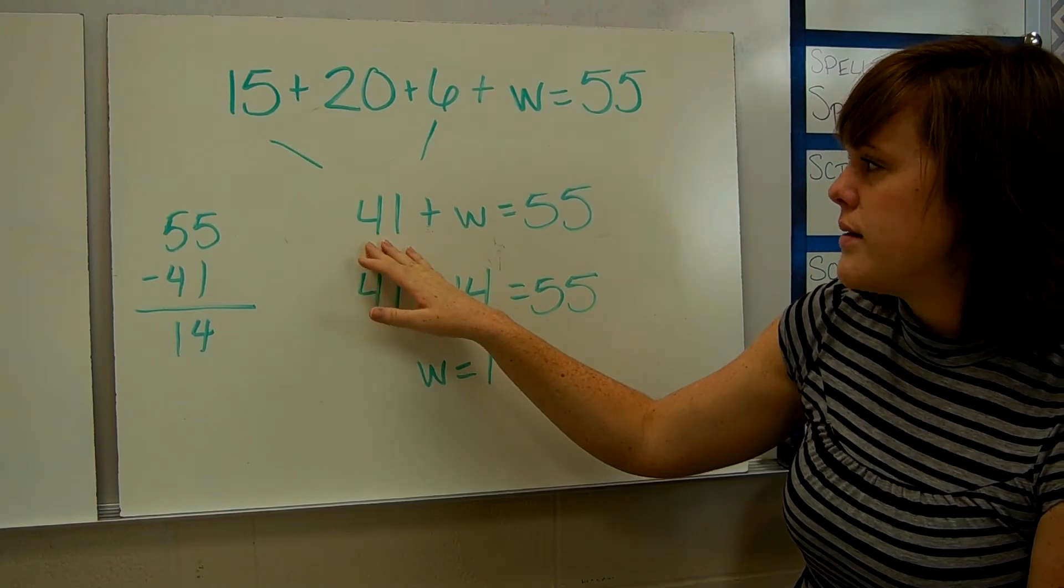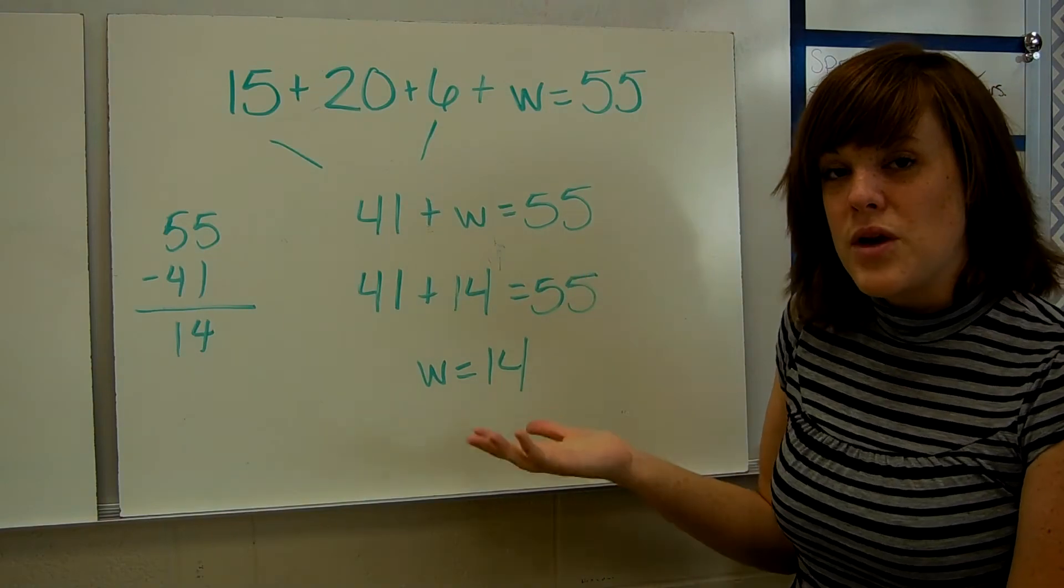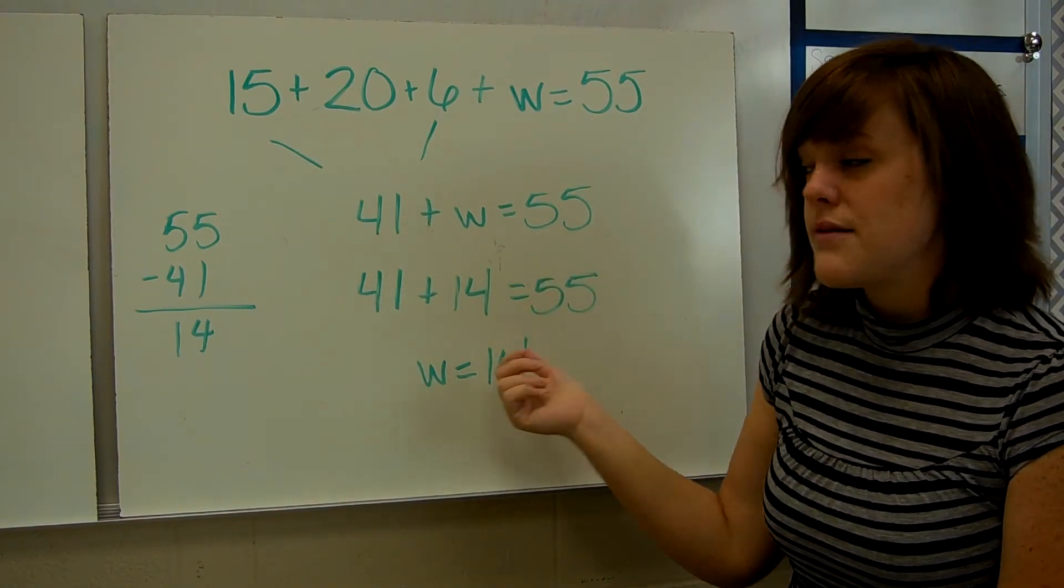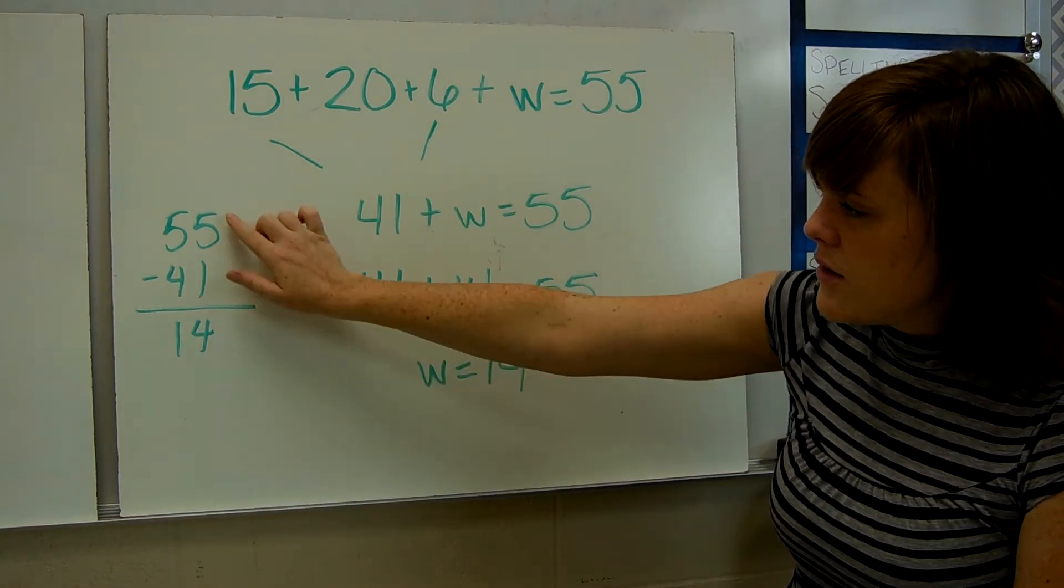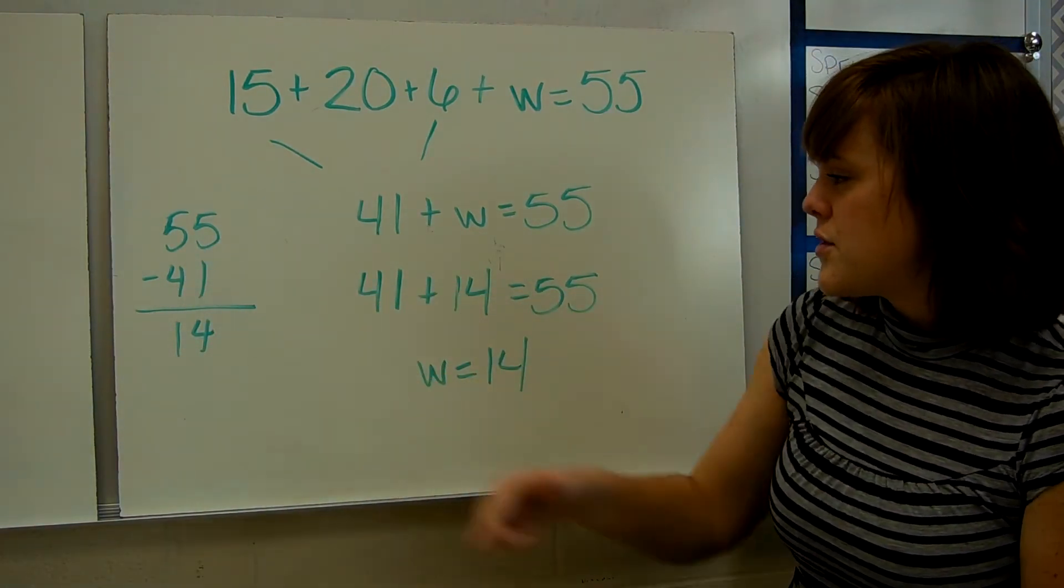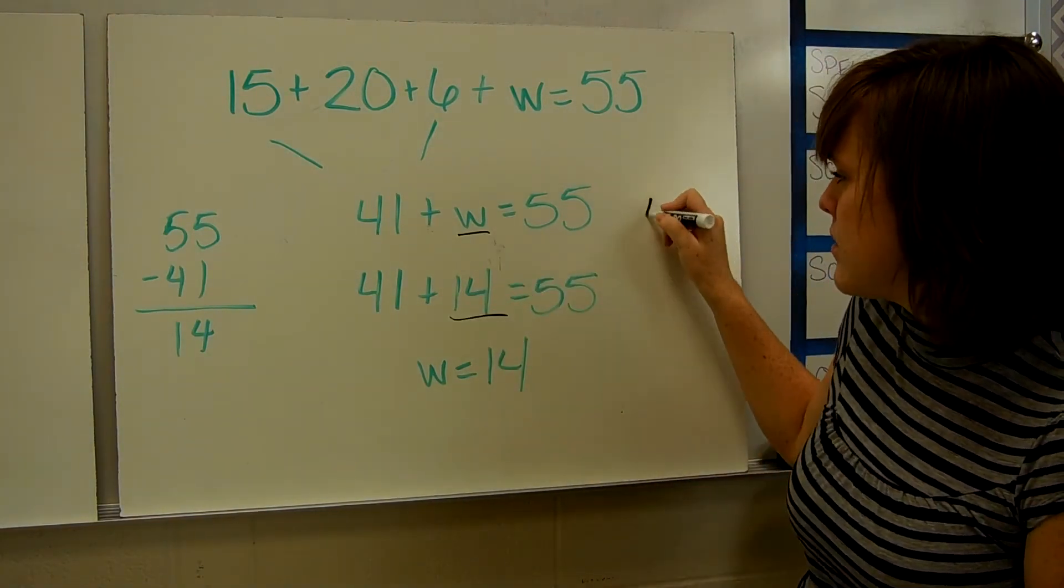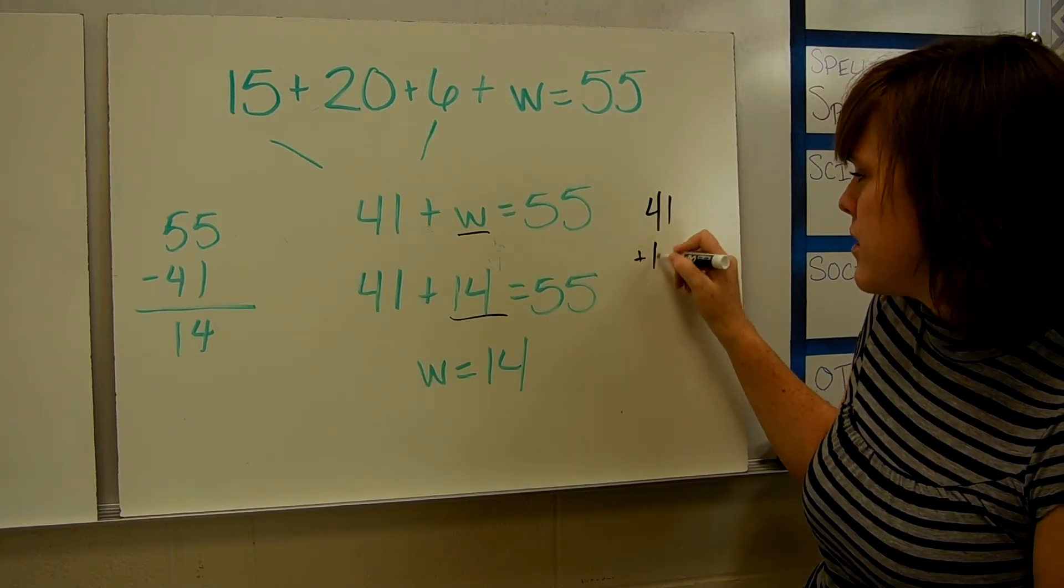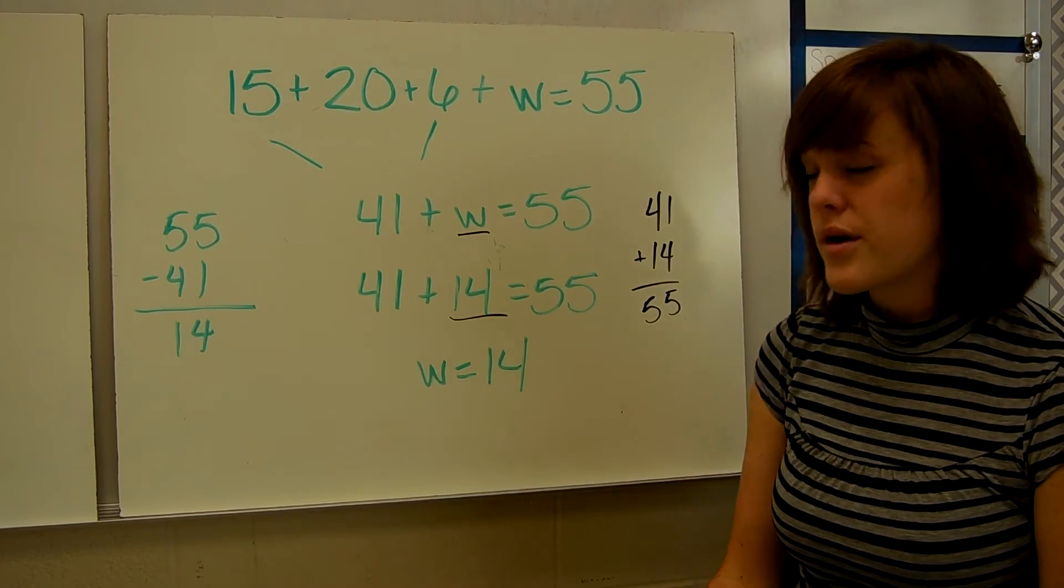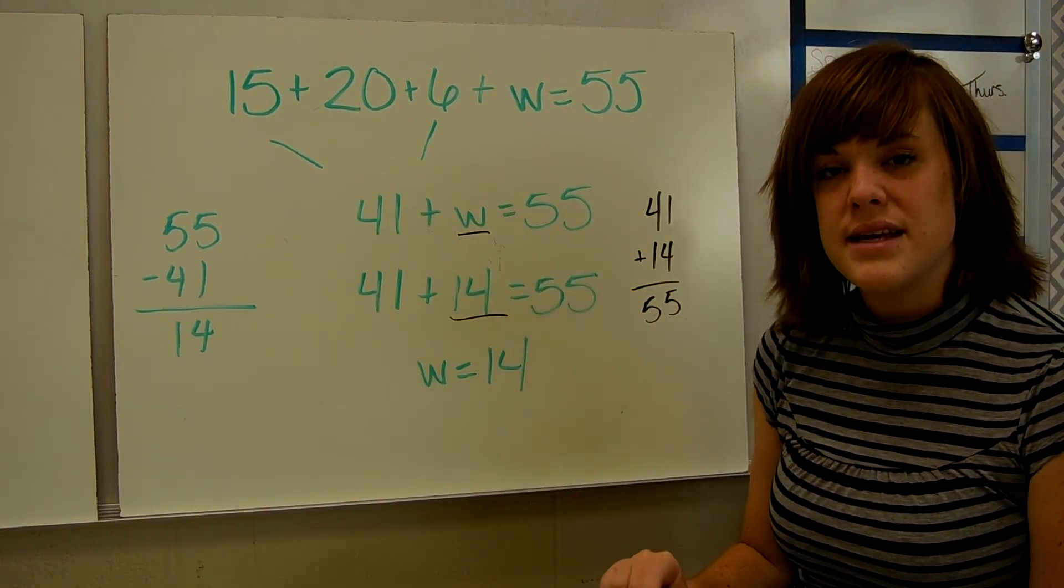Then I have 41 plus W equals 55. And we know how to do that. We're going to take away this 41 and see what's left. So I did that here. 5 minus 1 is 4, 5 minus 4 is 1. So that's 14. So your W would be 14. Of course, you would check your work. And it's right, so we're good. And that's how you'd solve a problem that has a lot of different addends in it.